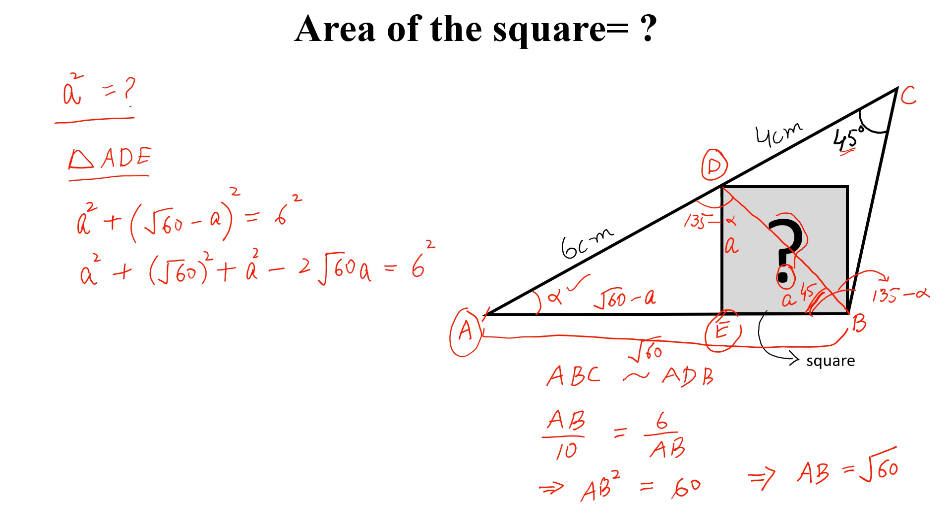If we simplify this more, we get 2A squared plus 60 minus 2 square root of 60A minus 36 equal to 0. Simplify more, we get A squared minus square root of 60A plus 12 equal to 0.